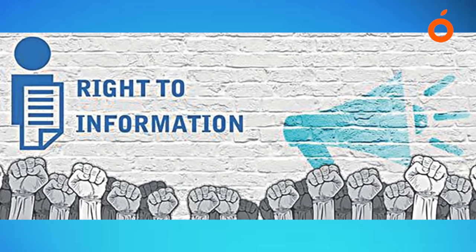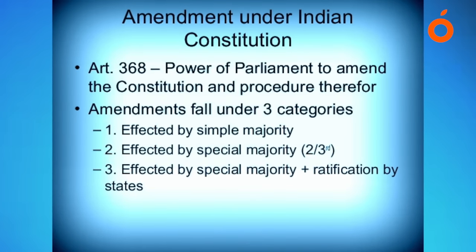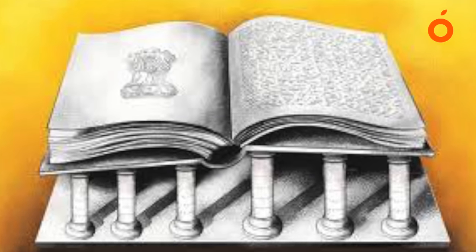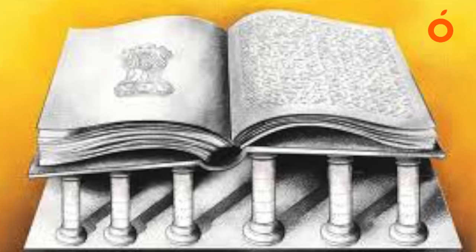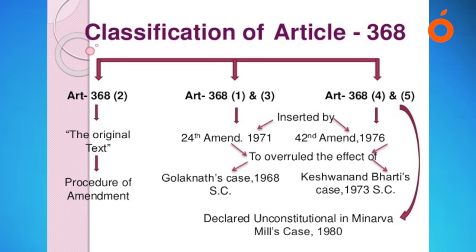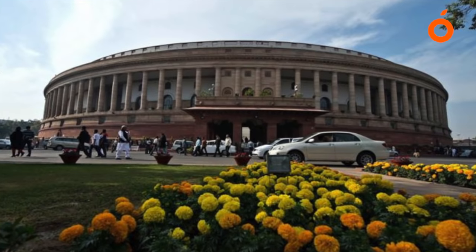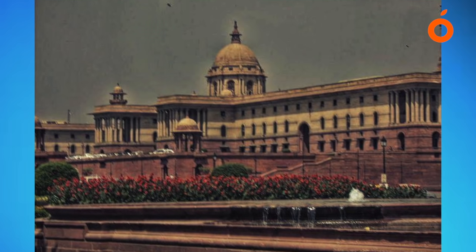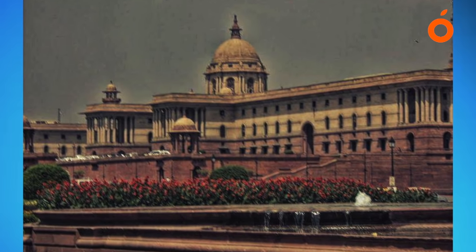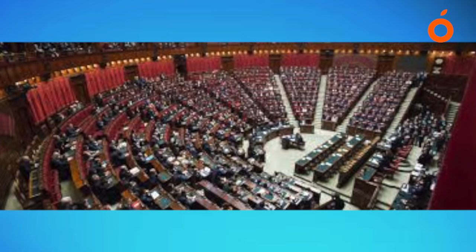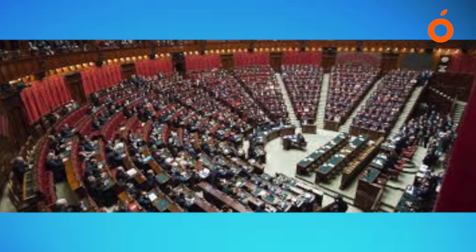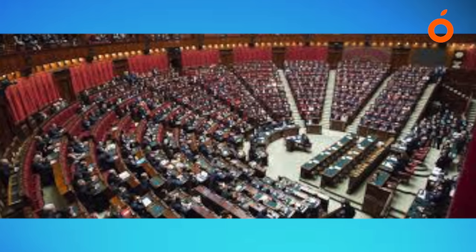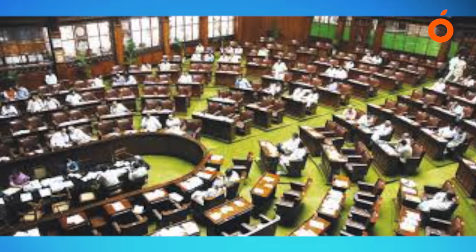The bill must be passed in each house by a special majority, that is a majority of more than 50 percent of the total membership of the house and a majority of two-thirds of the members of the house present and voting. Each house must pass the bill separately. In case of disagreement between the two houses, there is no provision for holding a joint sitting of the two houses for the purpose of deliberation and passage of the bill.